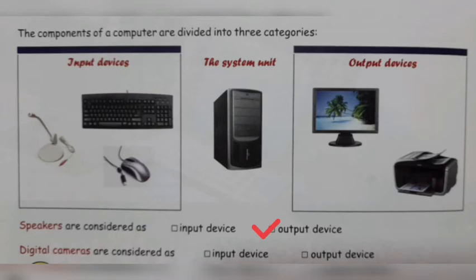Next — digital cameras are considered as what? Input device or output device? A digital camera is considered as an output device because the digital camera has a screen. We can see our pictures and we can see videos by using that screen. So the digital camera is an output device.